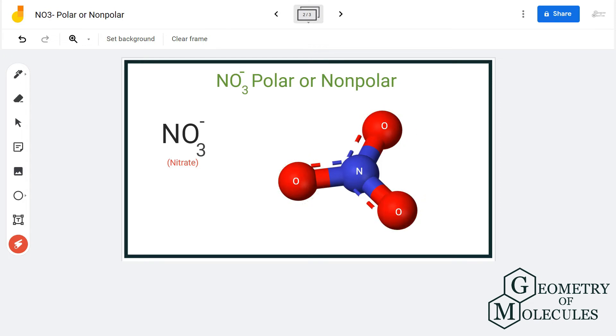According to VSEPR theory, the molecule takes the shape to minimize these forces. So this is the shape that NO3 minus ion acquires.